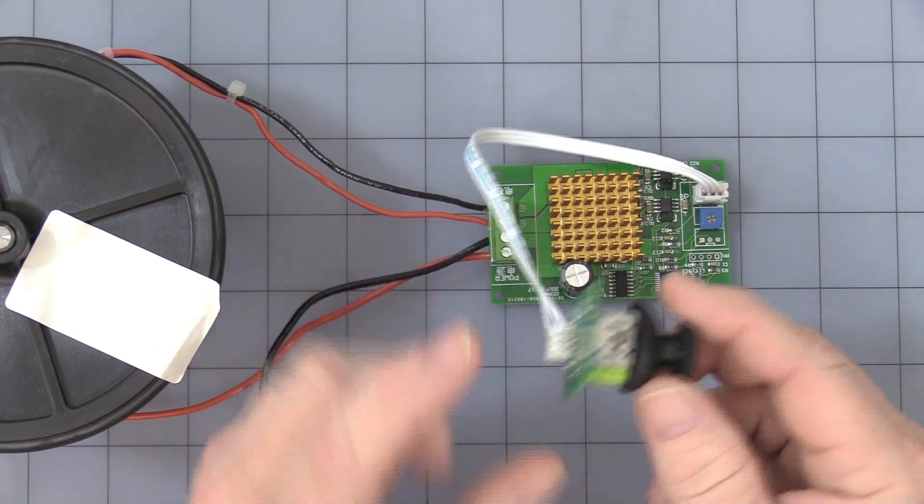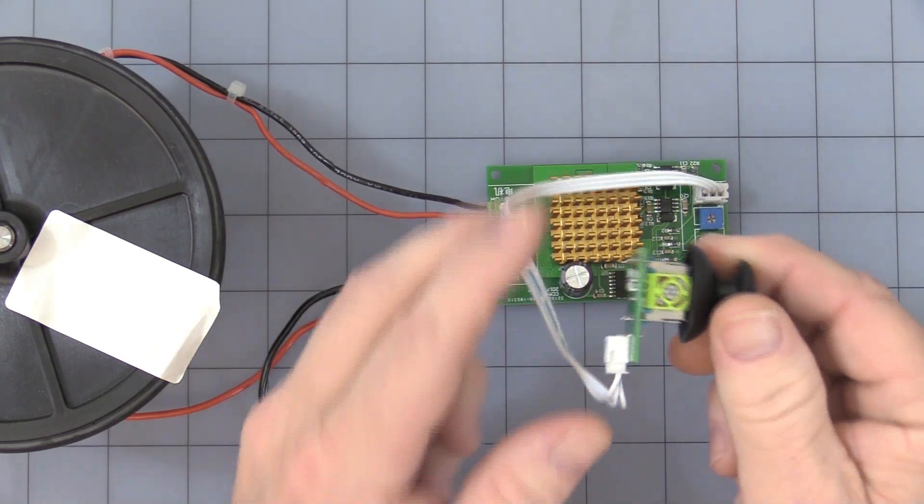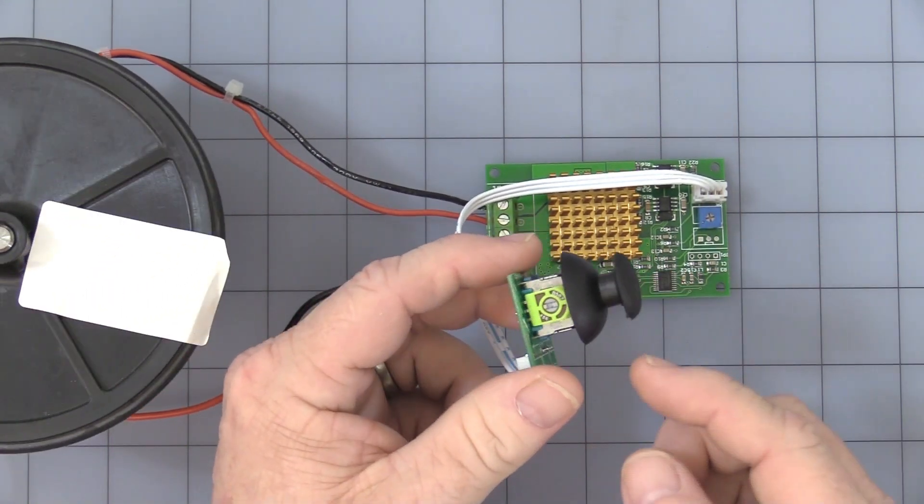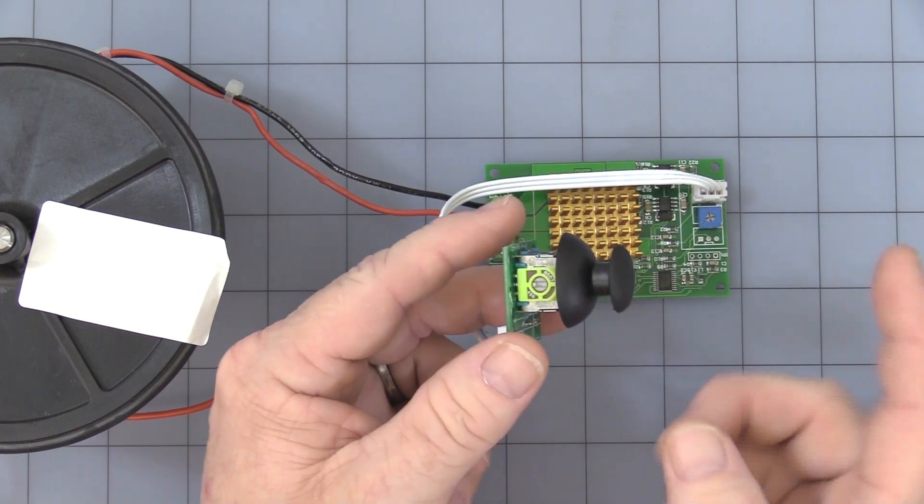So let's get to it here, this is a 5K pot, it's spring loaded back to center. So every time you release it, it will just go back to zero.